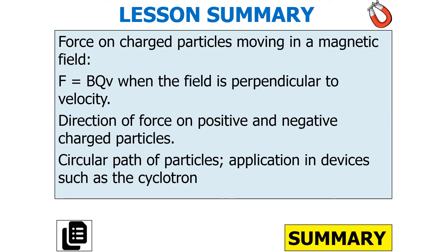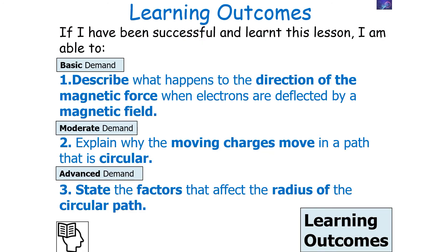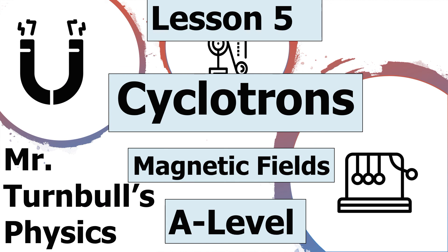To summarise today's lesson: forces on charged particles moving in a magnetic field are given by F = Bqv when the field is perpendicular to the velocity. The direction of force on positive and negative charged particles can be calculated, and we understand the circular paths of particles with applications in devices such as the cyclotron. We can describe the direction of the magnetic force on deflected electrons, explain why moving charged particles follow circular paths, and state the factors affecting the radius of that circular path. Thank you very much for listening, and have a lovely day.